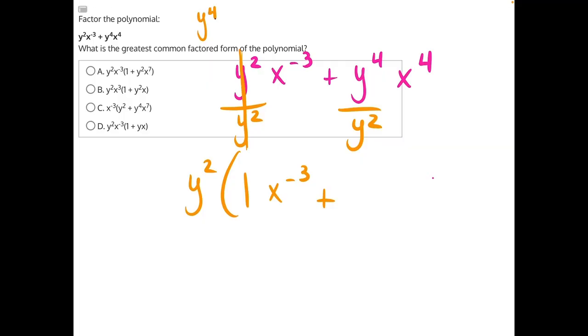y to the four minus two. And that would give us y squared. So we will have y squared and x to the fourth. Now that we've simplified our y terms, let's go over to our x terms.